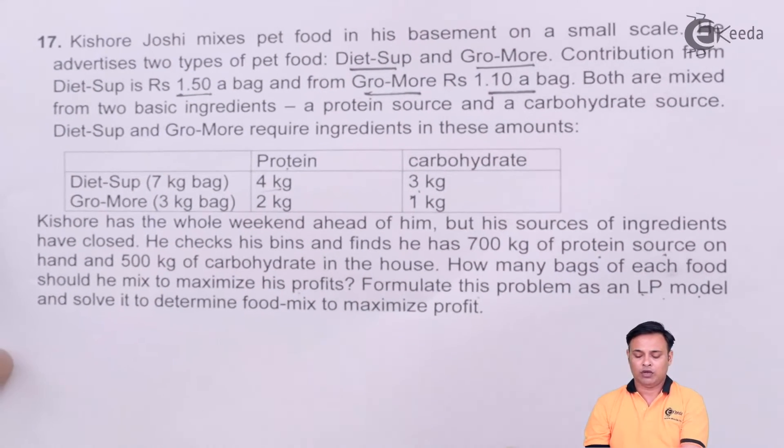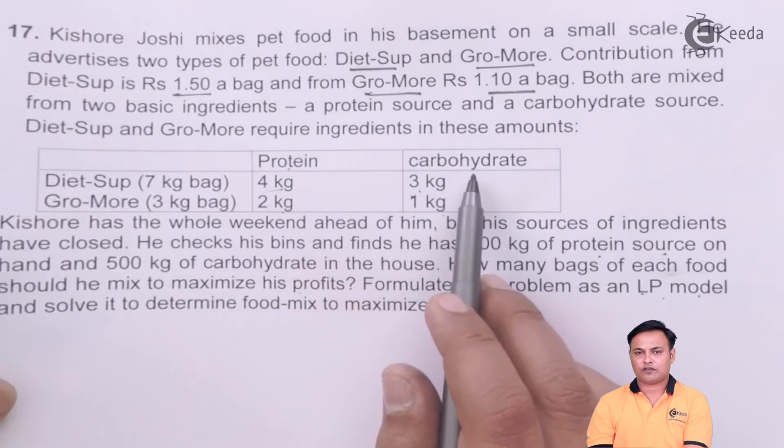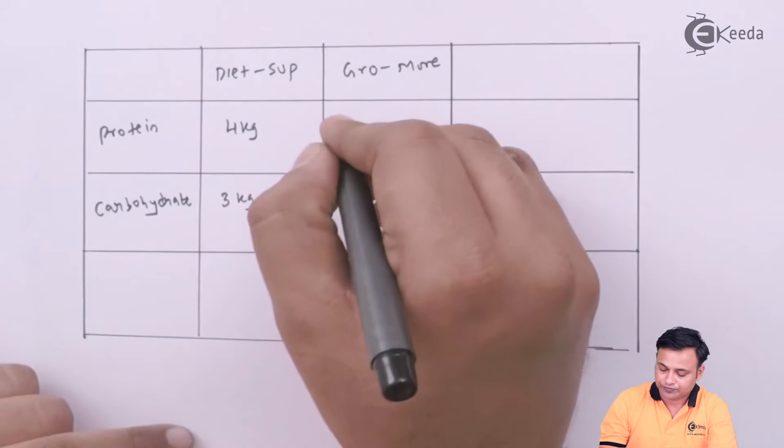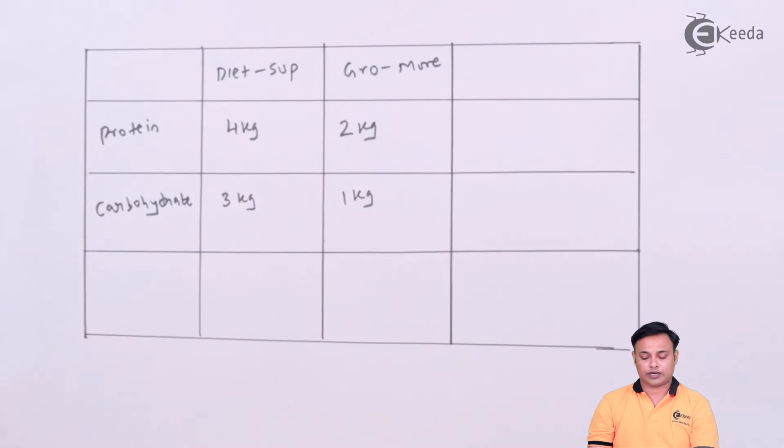In case of Gro-More, we have 2 kg of protein and 1 kg of carbohydrates.